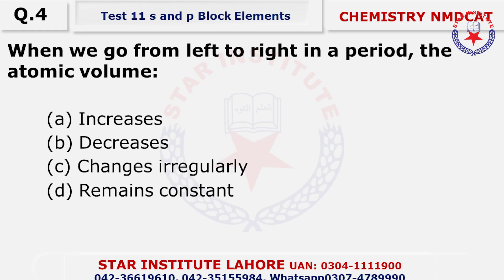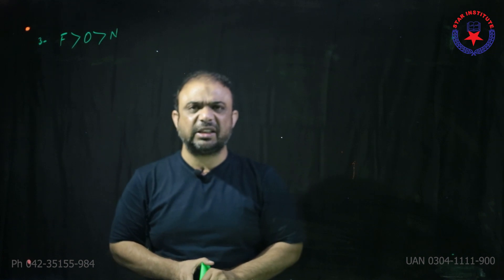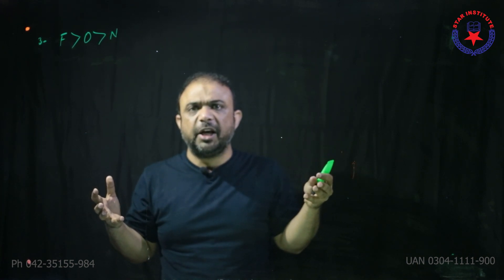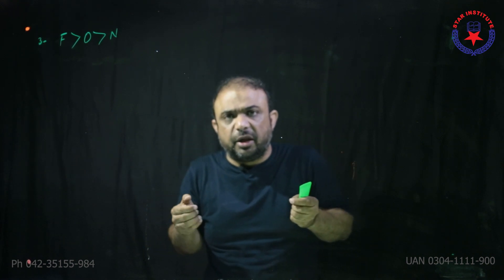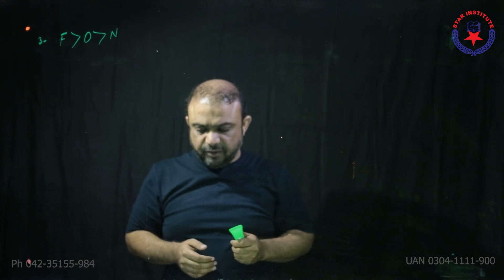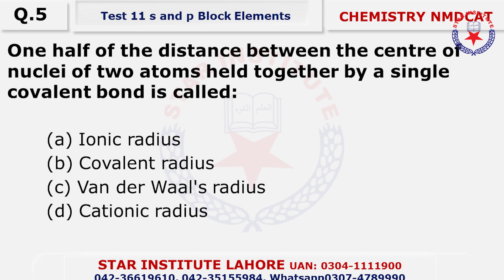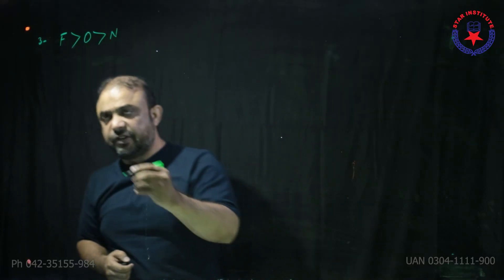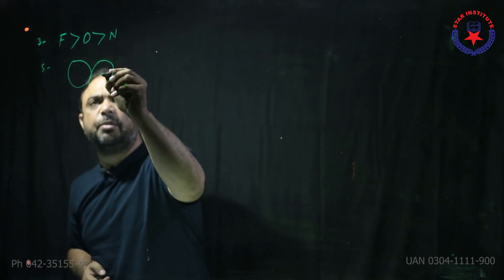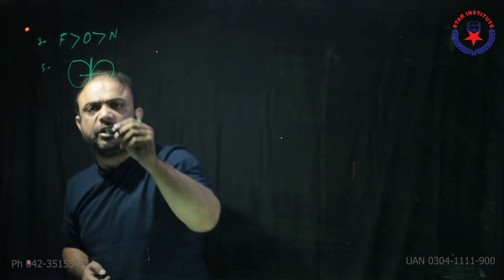Question number 4: When we go from left to right in the periodic table, the atomic volume will decrease. So the choice is B. Question number 5: One half of the distance between the centers of the nuclei of two atoms held together is called the covalent radius. If we have two hydrogen atoms held together, then one half of the distance is called the covalent radius.